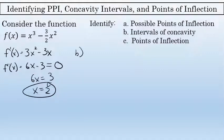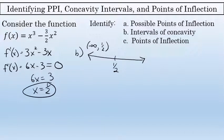In part b of this problem, to identify the intervals of concavity, you have to realize that this possible point of inflection breaks the function apart into intervals. The two intervals created by the x value of 1 half are the interval from negative infinity to 1 half, and the interval from 1 half to infinity.